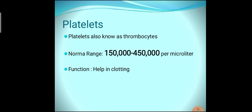Now, platelet counting procedure. Platelets are also known as thrombocytes. The normal range of platelets is 150,000 to 450,000 per microliter — this is the normal range present in every healthy individual. Platelets are responsible for clotting of blood. After trauma, when bleeding starts, platelets are the specific cells that help prevent further blood loss by helping in clotting of the blood.